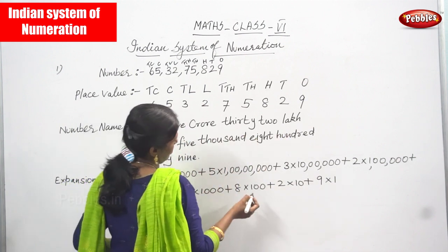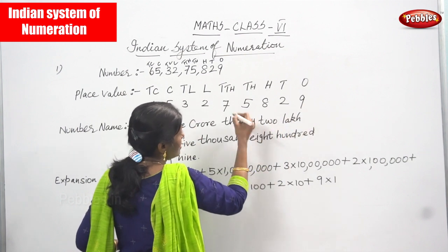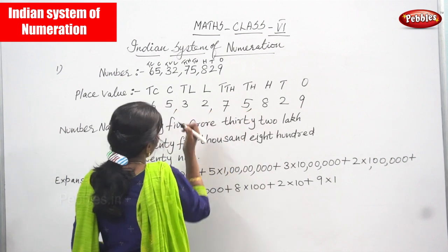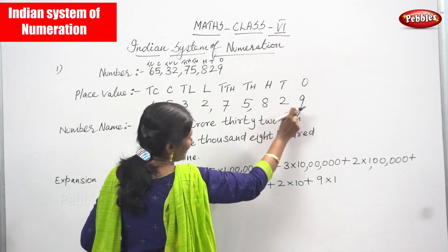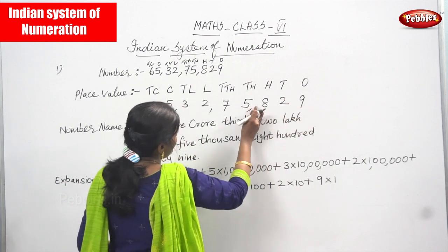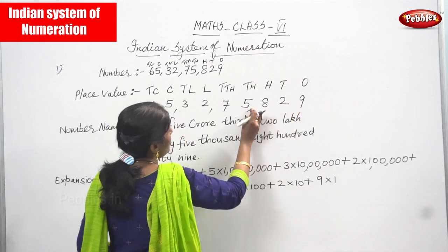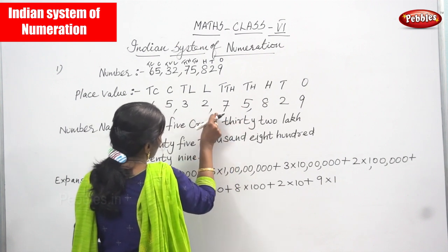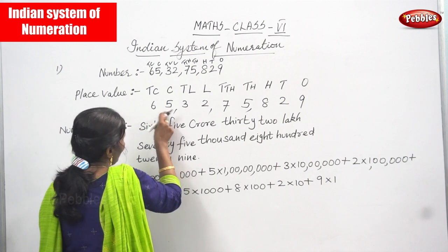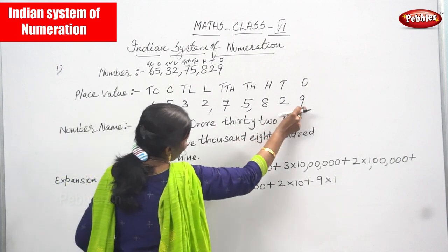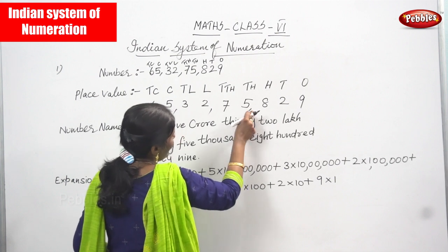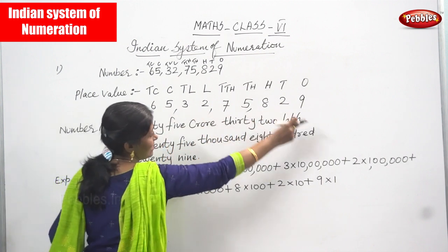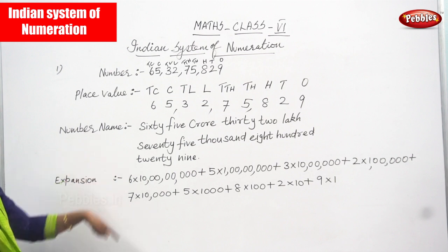How are you going to insert the comma? First, leave the last three digits — ones, tens, hundred — then insert a comma. Next, take two digits at a time: thousands and ten thousands, then lakhs and ten lakhs — two two digits. Then the next two digits are crore and ten crore. So last three digits you leave, then comma, then two two digits each time. That gives sixty five crores, thirty two lakhs, seventy five thousand eight hundred and twenty nine.